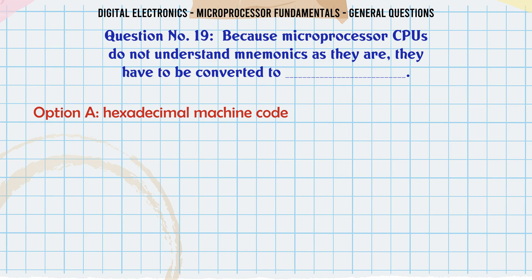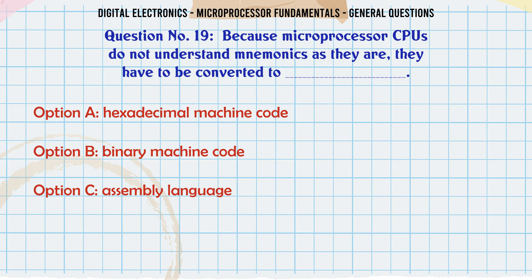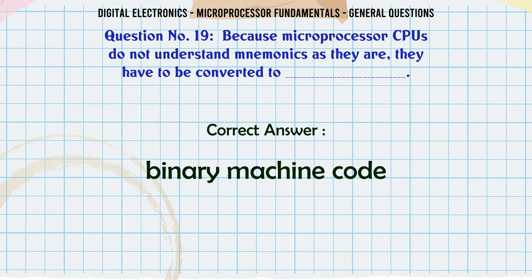Because microprocessor CPUs do not understand mnemonics as they are, they have to be converted to: A. Hexadecimal machine code, B. Binary machine code, C. Assembly language, D. All of the above. The correct answer is Binary machine code.